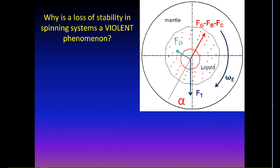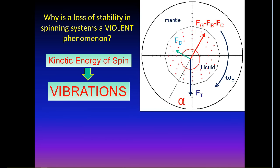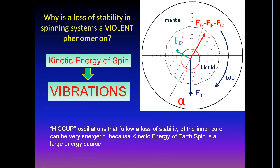Why is a loss of stability in spinning systems a violent phenomenon? Instability provides a mechanism for energy transfer from kinetic energy of the spin to vibrations. Hiccup oscillations that follow the loss of stability of the core can be quite energetic because the kinetic energy of Earth's spin is a very large energy source.